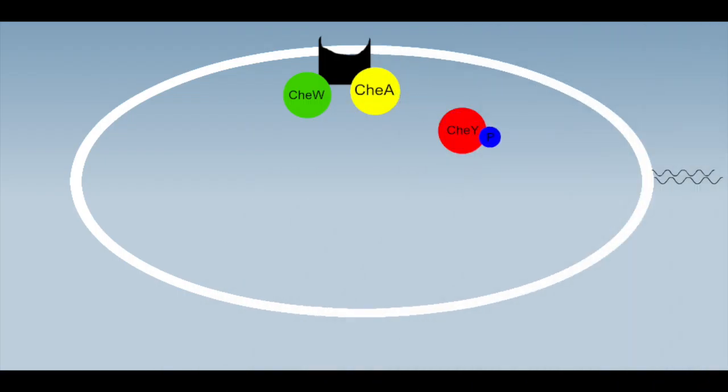the attractant is not bound to MCP, stimulating CheA to autophosphorylate itself using ATP. CheA will then donate its phosphate group to CheY, which moves it towards the flagella, causing the flagella to rotate in a clockwise motion that would result in a tumble.